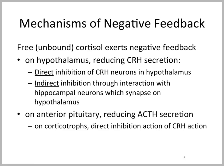According to the free hormone hypothesis, it's the unbound glucocorticoid — in this case cortisol — that exerts negative feedback. It does so in the hypothalamus by reducing CRH secretion in two ways: directly, by inhibiting the CRH neurons in the hypothalamus, and indirectly, through interaction with hippocampal neurons which synapse on the hypothalamus. The hippocampus is normally associated with memory, but here the glucocorticoid effect causes indirect inhibition.